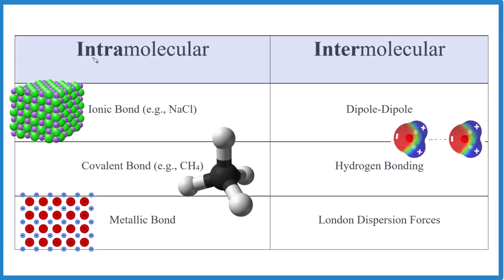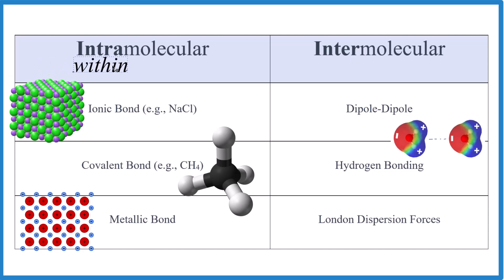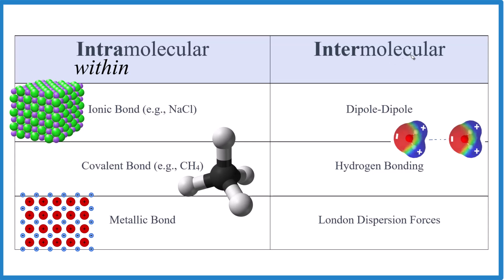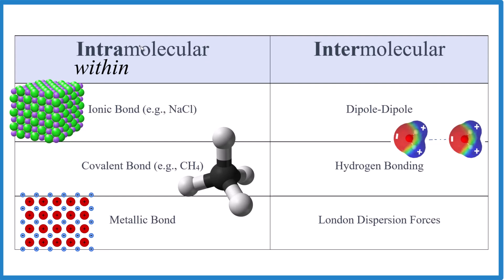Real quick, the difference between intramolecular and intermolecular. So intramolecular — 'intra' means within, like intravenous, within a vein. We don't really say intramolecular much in chemistry. When we do, we're referring to the ionic bond, covalent bond, or metallic bond. We'd rather just say ionic bond, covalent bond, or metallic bond than intramolecular.